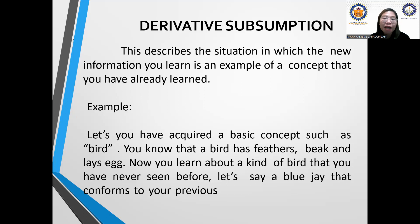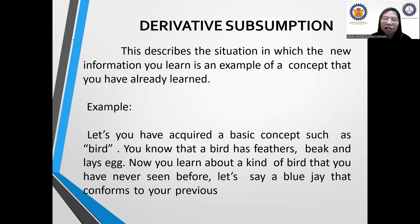You know that a bird has feathers, a beak, and lays eggs — it is not a mammal. Now you learn about a kind of bird you have never seen before. For example, you only knew about eagles or maya birds before. Now your teacher introduces you to a different type of bird — say, a blue jay — that conforms to your previous knowledge. This is derivative subsumption: from your previous learning, your knowledge and understanding about a specific or general concept expands.